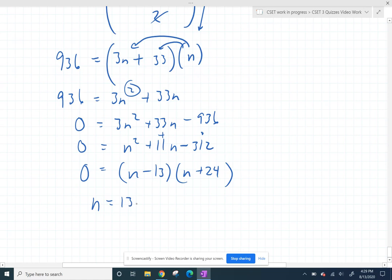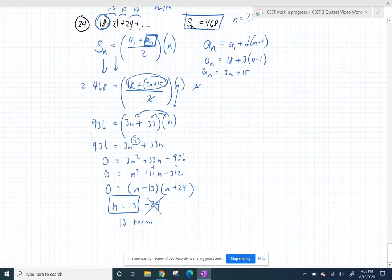But things that multiply to negative 312 and add to 11 happen to be negative 13 and positive 24. So n would be 13 or negative 24, and since you can't have a negative term, you can't have the negative 24th term, there must be 13 terms in the series. So you could keep adding 13 of these terms, and the sum will be 468.